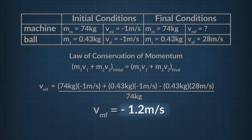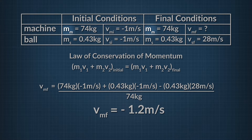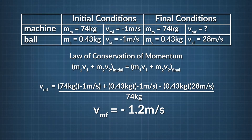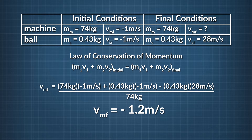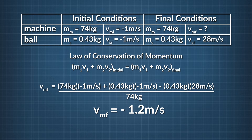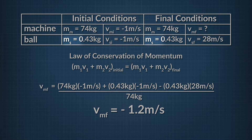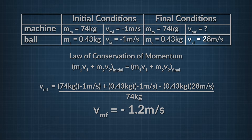Did you get negative 1.2 m/s? If so, great work. If not, let's take a look at how we got that answer. As always, we want to construct a data table showing all the data that's given, along with what we're solving for. The mass of the soccer ball machine, M sub M, is 74 kg. The initial velocity of the machine and the soccer ball is 1 m/s to the left, in the negative x direction. We are solving for the final velocity of the machine, V sub MF. The mass of the soccer ball, M sub S, is 0.43 kg. The final velocity of the soccer ball, V sub SF, is 28 m/s.